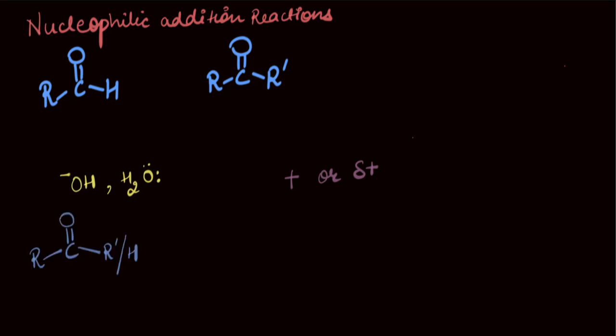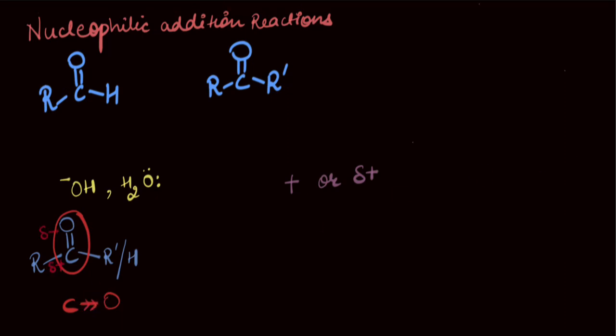Looking at this given carbonyl compound, it could be an aldehyde or a ketone. We can see how there is an electronegativity difference between the carbon and oxygen atom. And since oxygen is more electronegative, it will pull the electron density towards itself. Which tells us how the oxygen has a partial negative charge while carbon has a partial positive charge. So, this is our electrophilic center where the nucleophile is going to attack. But how? Let's find out.